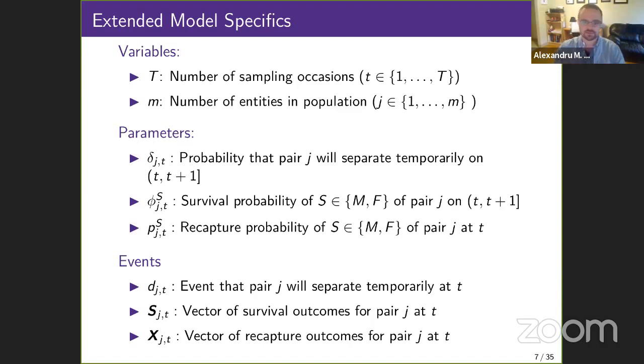Here we have similar parameters to the standard CJS model. Singles are effectively modeled in the exact same way, but pairs are instead modeled using two joint distributions for survival and recapture, each with four possible outcomes. The states of the survival distribution are that both animals in a pair survive, only the male survives, only the female survives, or both perish from one point in time to another. Similarly, the states of the recapture distribution are that both partners are caught, only the male's caught, only the female's caught, or both remain uncaptured at some time t.